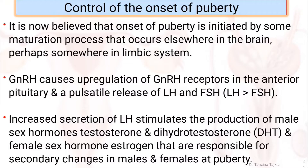It is now believed that the onset of puberty is initiated by some maturation process that occurs elsewhere in the brain, perhaps somewhere in the limbic system. GnRH causes upregulation of gonadotropin-releasing hormone receptors in the anterior pituitary and pulsatile release of luteinizing hormone and follicle-stimulating hormone.